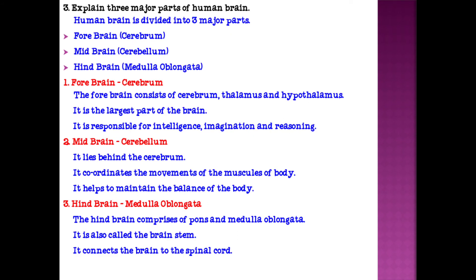Third question: Explain the three major parts of the human brain. The human brain is divided into three major parts: forebrain (cerebrum), midbrain (cerebellum), and hindbrain (medulla oblongata). The forebrain consists of cerebrum, thalamus and hypothalamus — it is the largest part of the brain, responsible for intelligence, imagination and reasoning. The midbrain, or cerebellum, lies behind the cerebrum, coordinates muscle movements, and helps maintain body balance. The hindbrain comprises the pons and medulla oblongata, also called the brain stem, and connects the brain to the spinal cord.